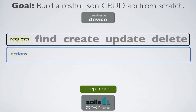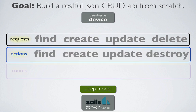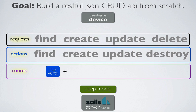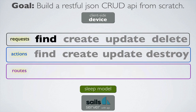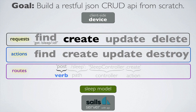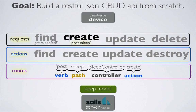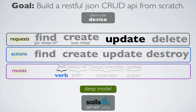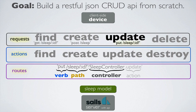We'll create actions that correspond to the request and then build up routes that match the appropriate HTTP verbs and paths with the corresponding controller and action. The find request will use the HTTP verb GET with the path slash sleep colon ID and bind to the sleep controller and the find action. The create request will use the verb POST with the path slash sleep and bind to the sleep controller and the create action. The update request will use the verb PUT with the path slash sleep colon ID and bind to the sleep controller and the update action.